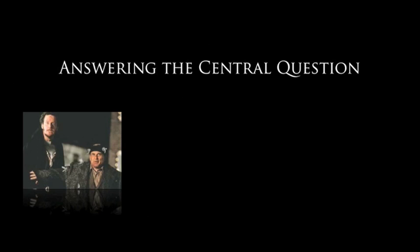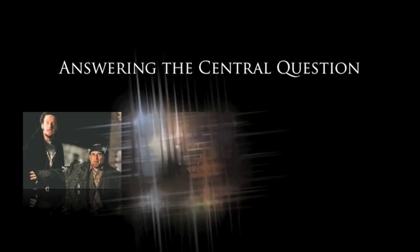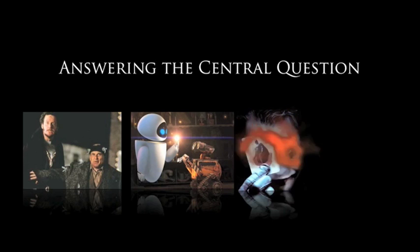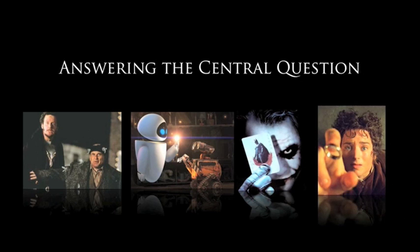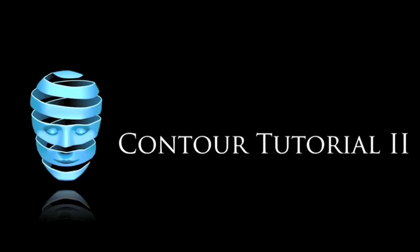Let's get back to the central question, because that's what Act Three is all about. In Home Alone, will Kevin defeat the dim-witted robbers and save the house? Will WALL-E find Eve and live happily ever after? In The Dark Knight, will Batman defeat the Joker and save Gotham City? In The Lord of the Rings: The Return of the King, will Frodo destroy the ring and save Middle-earth? Act Three is where these questions are answered once and for all. So how do we incorporate these into the Contour software? Stay tuned. That's it for our second Contour tutorial. For more information, consult your user's guide or contact us on the web. We're happy to help. Write some good stuff today. Thank you!